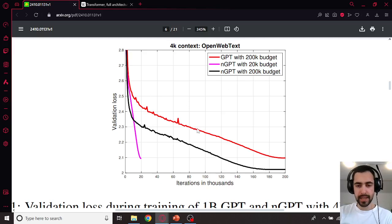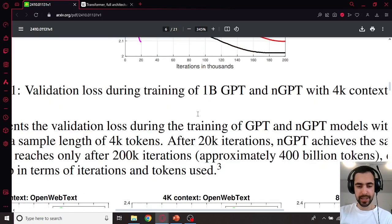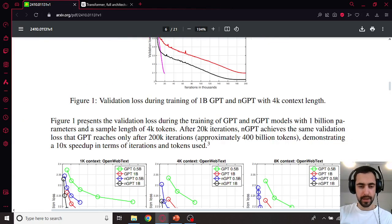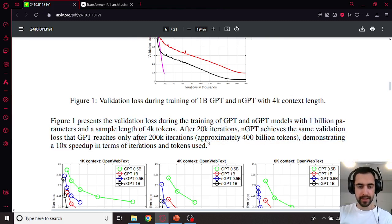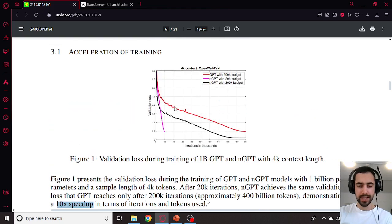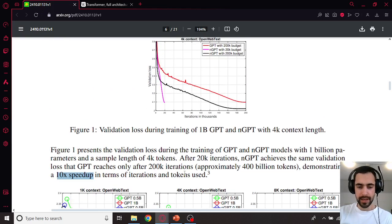Now what is this black line? It says nGPT with 200,000 iterations. Now I'm not really sure what this black line is because they didn't explain it here in this part, so maybe somebody can help me out. But what they say here is we have 10x speed up in between red line and pink line and it's about 400 billion tokens for 200,000 iterations.